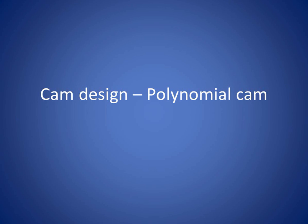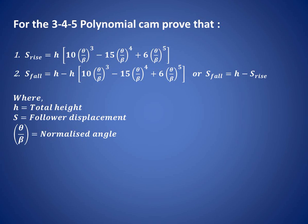In this video we will try to understand how to design a polynomial cam. We have to derive the equation for s-rise and s-fall in the case of a 3-4-5 polynomial cam, where h is the total height, s is the displacement of the follower, and theta upon beta is known as the normalized angle. This is the equation we want to prove for rise motion (outward stroke) and fall motion (return stroke).